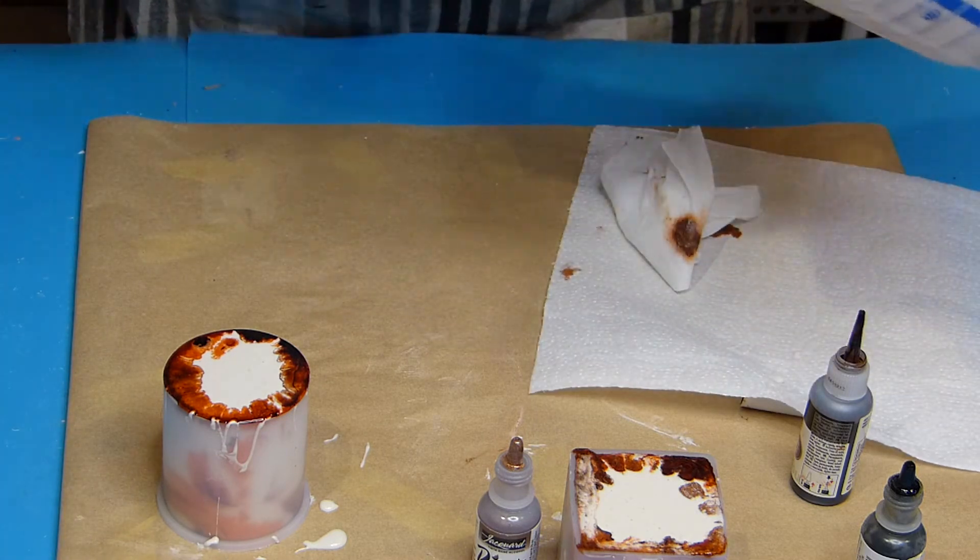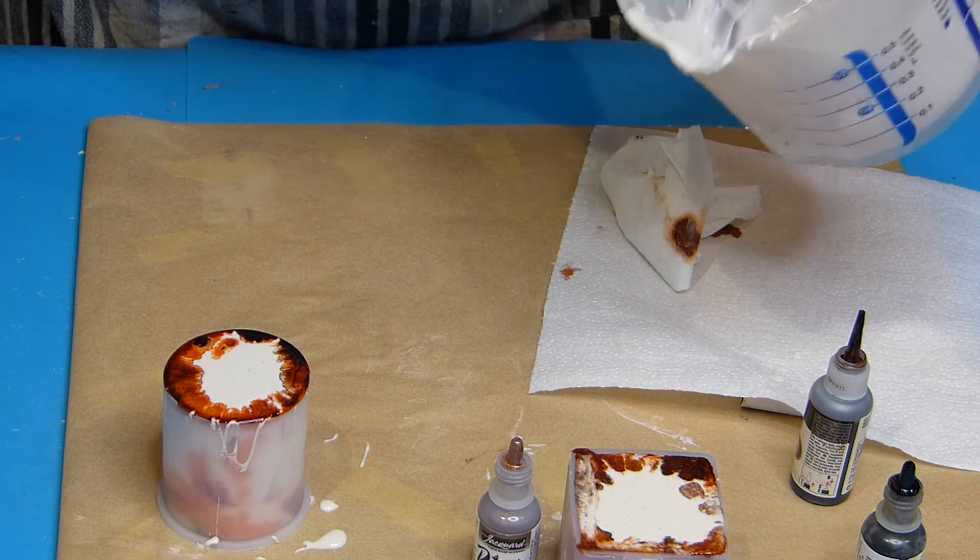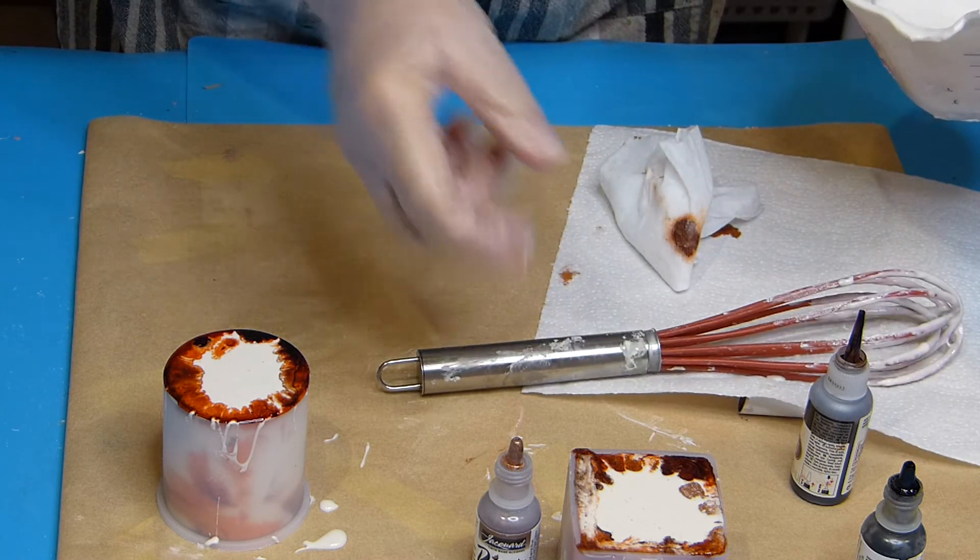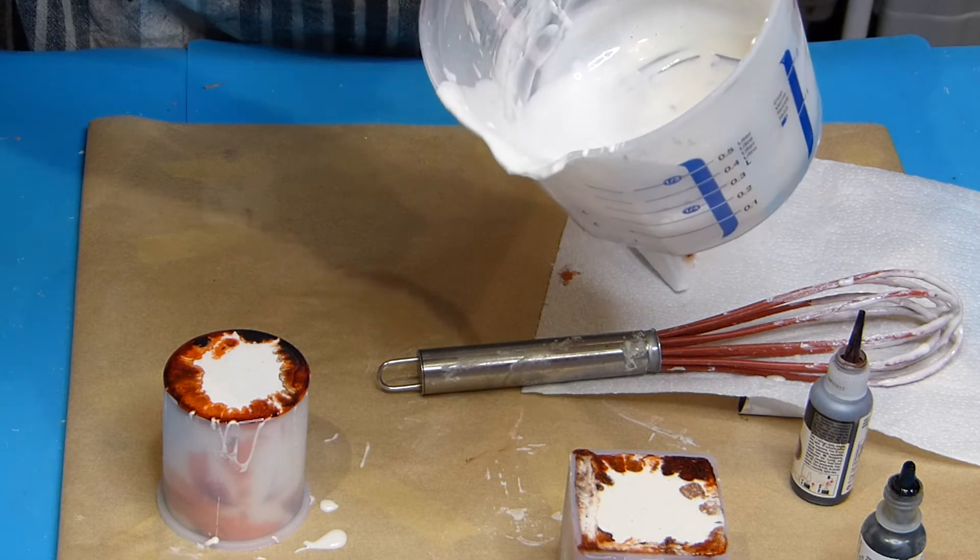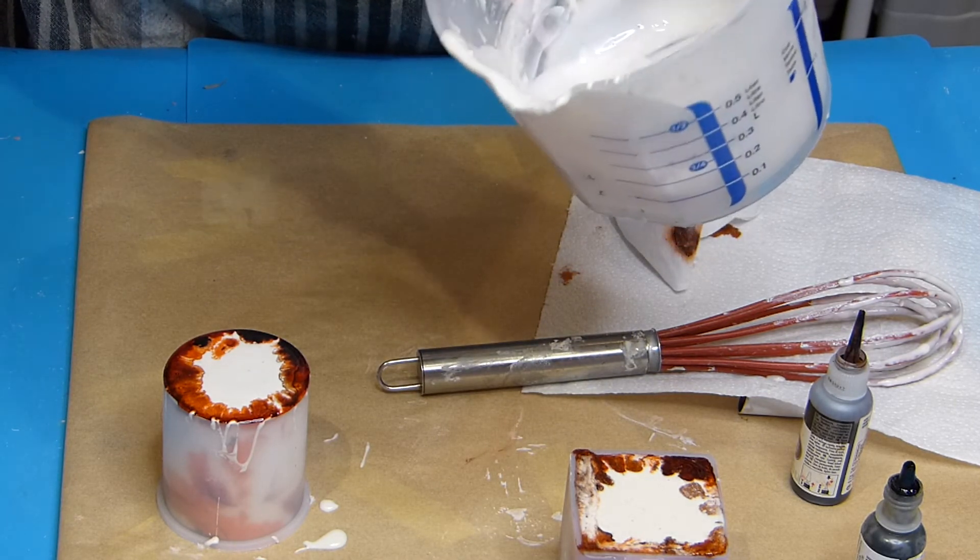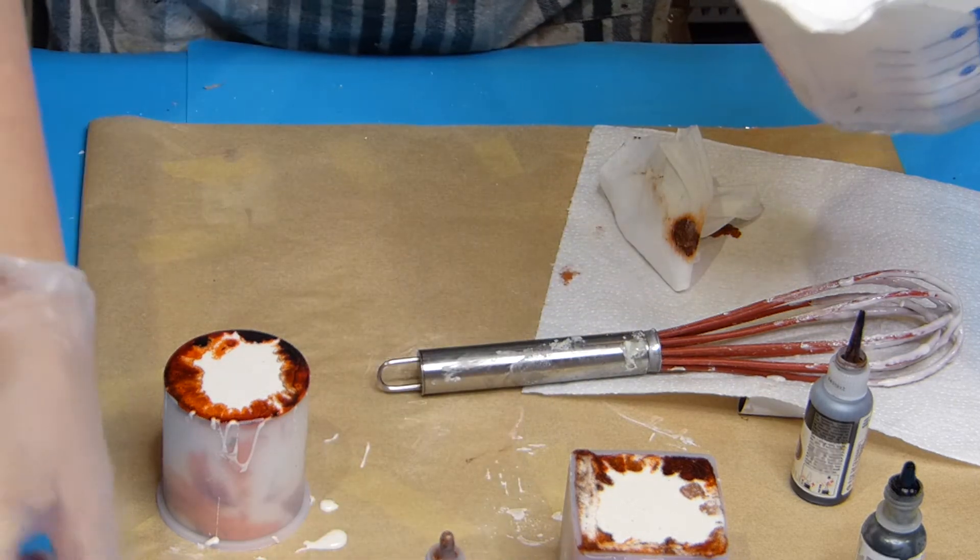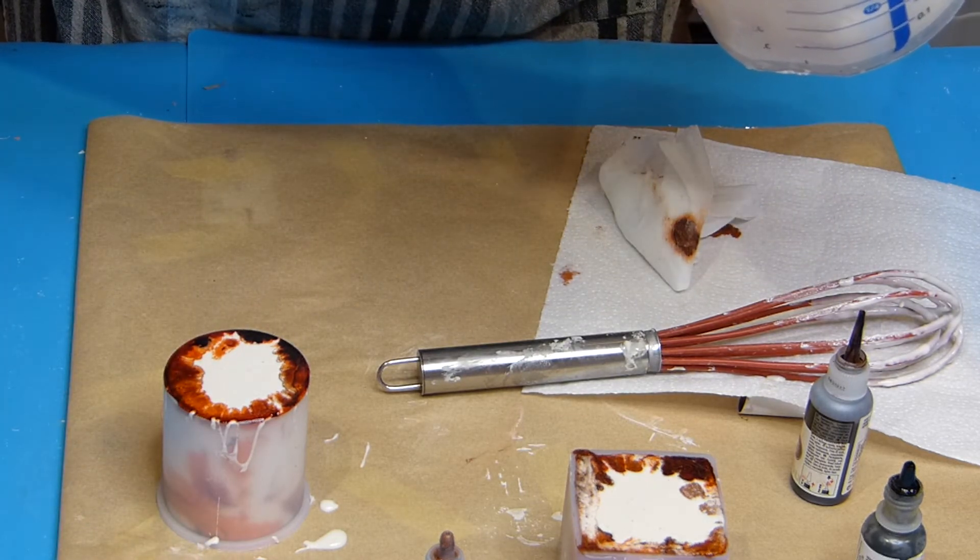Well I have some Jesmonite left. I'm not going to waste it. I'm going to fill my little cube mold and here I will make in another way. I will add some drops of it in the container directly.